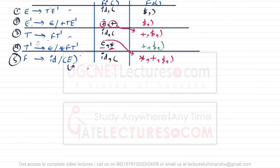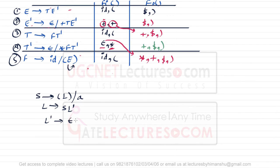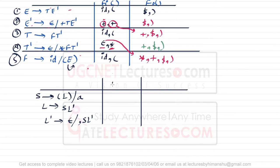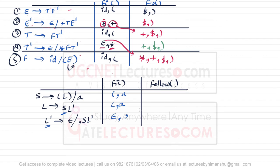Let's take one more grammar example. S can derive opening bracket L closing bracket or a. L can derive S L'. L' can derive epsilon or comma S L'. We need to find the FIRST and FOLLOW of these productions. FIRST of S is opening bracket or a. FIRST of L is given by S itself, so it is opening bracket and a. FIRST of L' is epsilon or comma.